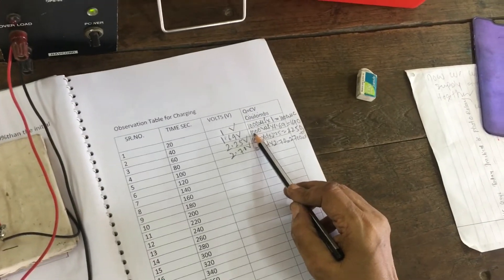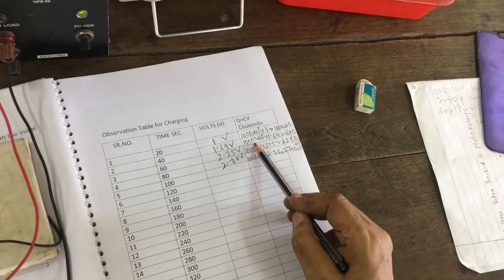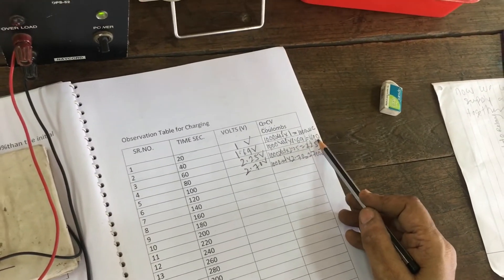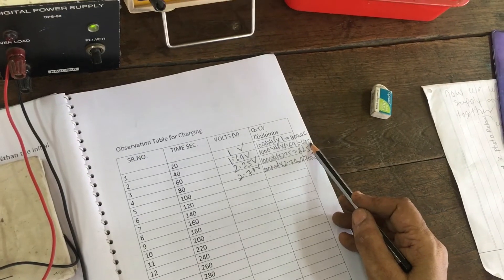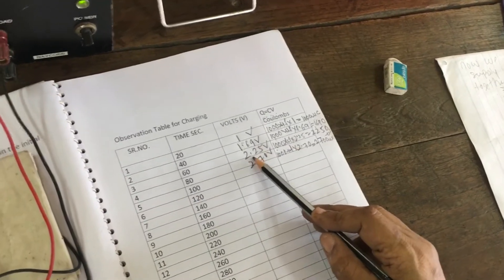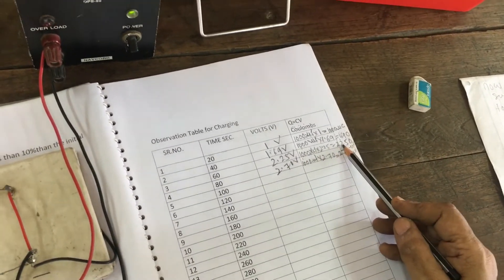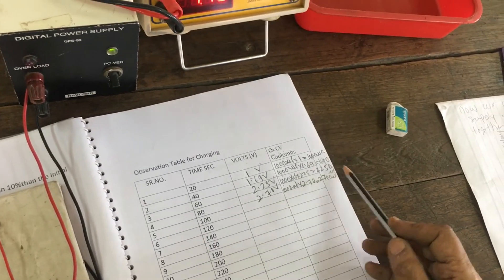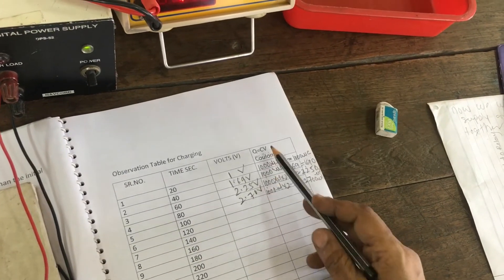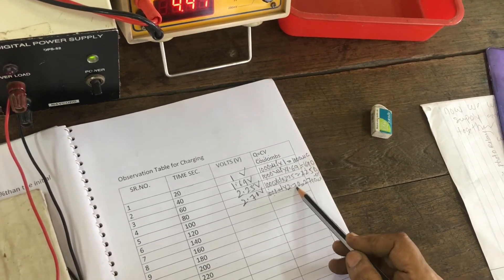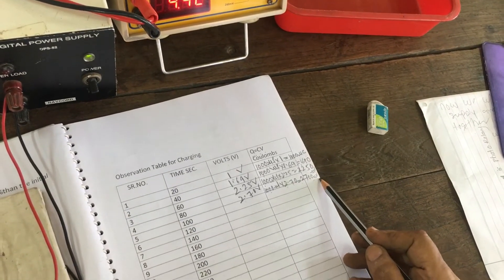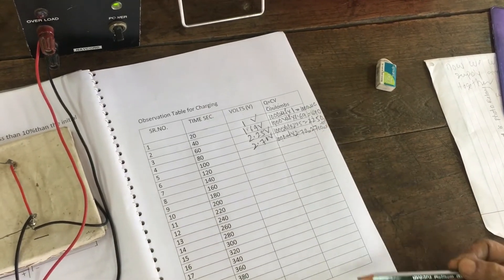Now, the second: C is equal to 1000 microfarad multiplied by voltage 1.69 equal to 1690 microcolumns. Next one: 1000 into the voltage 2.25 equal to 2250 microcolumns. Next is 80 seconds: voltage 2.7 and capacitor is 1000. 1000 multiplied by 2.7 is equal to 2700 microcolumns. In this way, you have calculated all the readings.